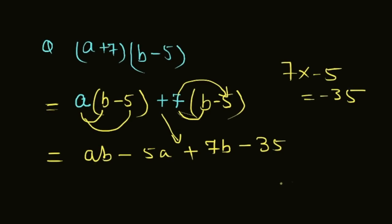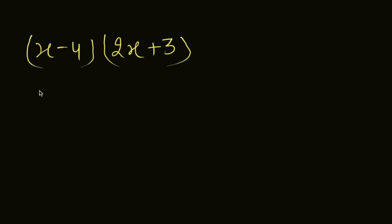Let's take another question. Same process - take x from the first bracket and put a little gap of minus 4. We are going to write minus 4, then second bracket. We are going to multiply this 2x plus 3.